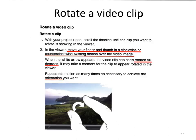There is another gesture you may have overlooked: you can rotate a video clip in iMovie using two fingers. Use one finger and your thumb in a clockwise or anti-clockwise twisting motion over the video image. When a white arrow appears, the video clip has been rotated by 90 degrees. You may have to repeat this action as many times as necessary to achieve the correct orientation of the video clip.